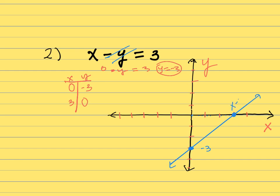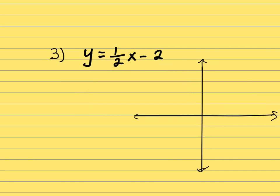Now we have x minus y equals 3. We are working with x minus y equals 3. Let's think about this — when it comes to fractions, you need to be careful. If nothing changes the x value, we use zero. X is zero, and we work from there.